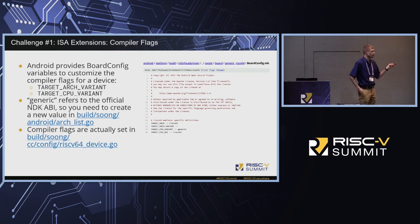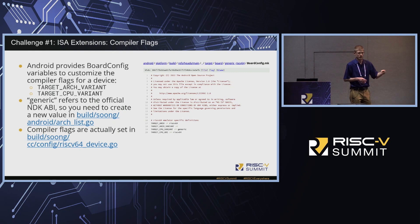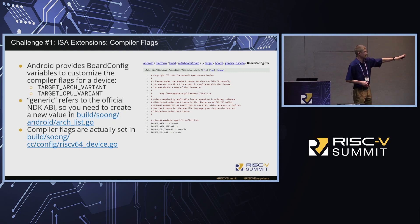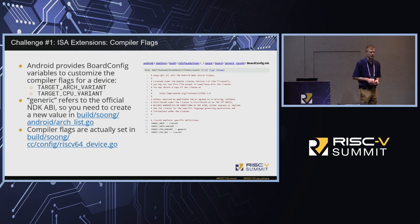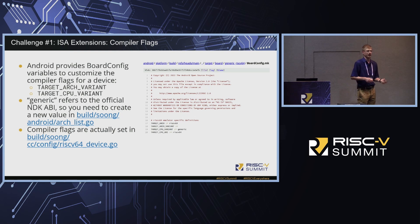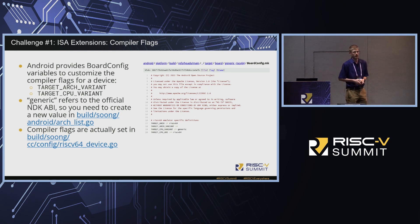To do that, Android provides board config variables to customize the target compiler flags for a specific device — an architecture and a CPU variant. The default CPU variant is called 'generic', which refers to the minimum ABI required by Android: RVA22 plus vector and vector crypto. To add a new one, you add it to the list in that file and map it to a new set of compiler flags, setting the -march to whatever target you're building for.